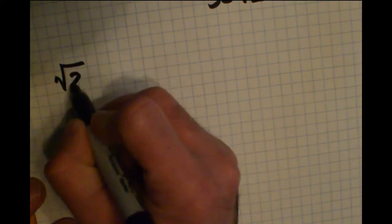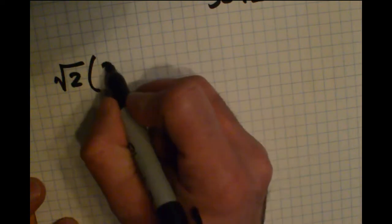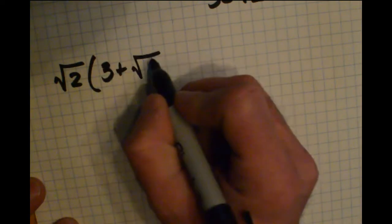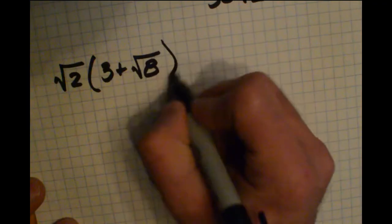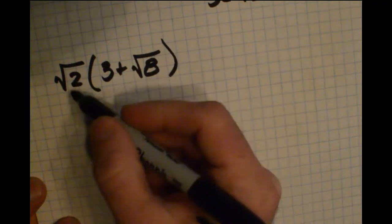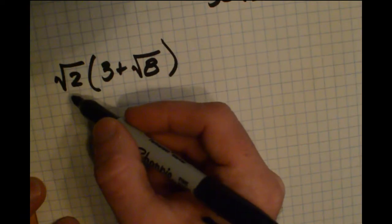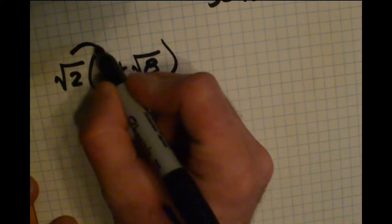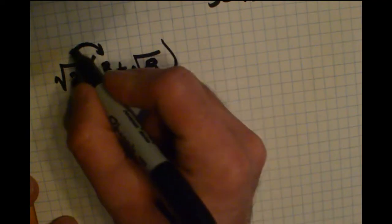Let's take a look at a couple more examples. Let's look at one that takes into account the topic we learned last chapter about multiplying out binomials and polynomials. Say we have square root of 2 times the quantity 3 plus square root of 8. Knowing what we know about distribution, we're taking this value on the outside and multiplying it by both terms on the inside.